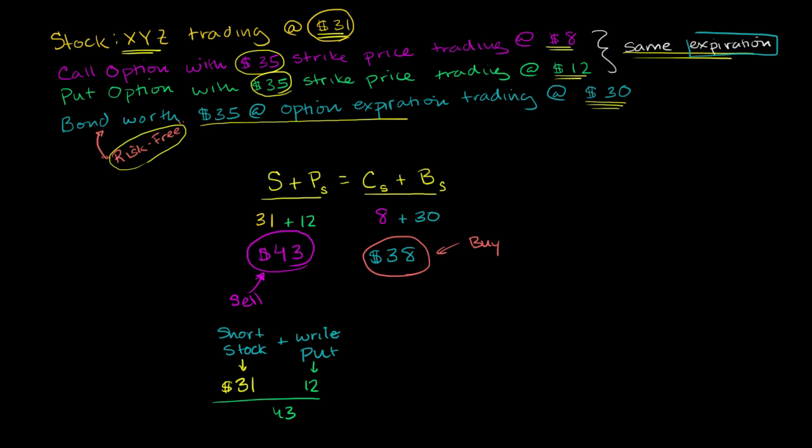Then you buy the call and the bond. You spend $8 on the call, $30 on the bond, so you spend $38 total. You make a profit of $5. And what we're going to see in the next video is you make this profit up front, and no matter what happens to the stock price going forward, you're able to rearrange things so that everything else cancels out and you keep your $5.